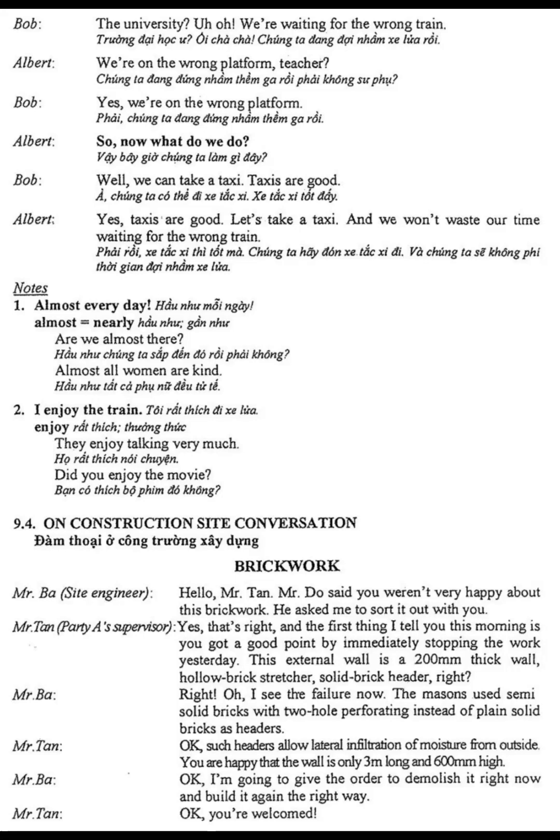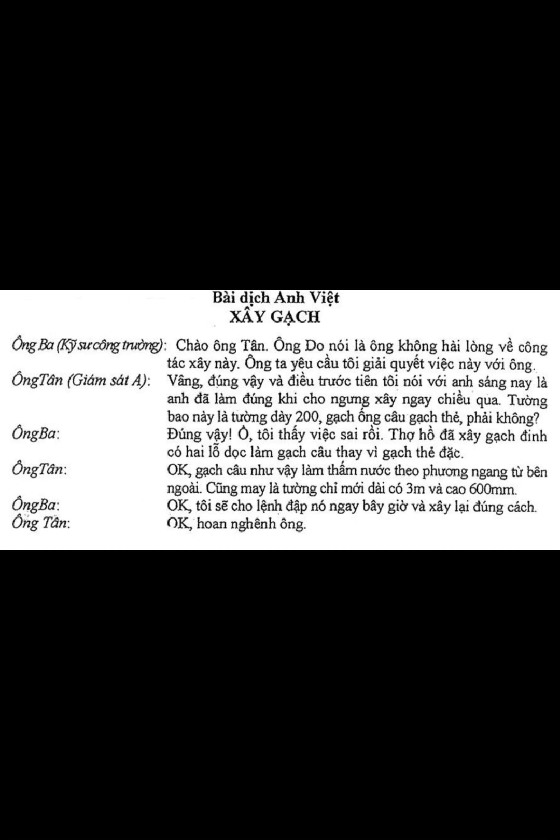— Oh, I see the failure now. The masons used semi-solid brick with two-hole perforated bricks as headers, inserted into a set of plain solid bricks. Such headers allow lateral infiltration of moisture from outside. — You are happy that the wall is only 3 meters long and 600 millimeters high? — I'm going to give the order to demolish it right now and build it again right away. — Okay. You're welcome.